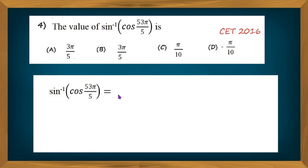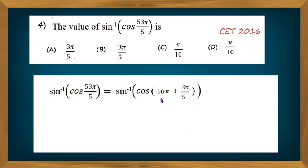This is equal to sine inverse of cos(10π + 3π/5), because 53π/5 means 50 plus 3, that is 10π plus 3π/5. Since cos(2nπ + θ) equals cos θ — here it is 2 times 5 times π — this is of the form cos(2nπ + θ), and it equals cos θ.